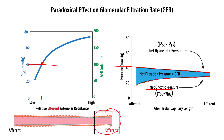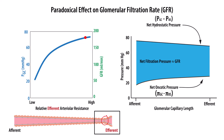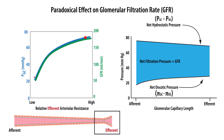As we increase the efferent arteriole resistance, we will increase the hydrostatic pressure, as we see here. If we maximally constrict the efferent arteriole — high resistance — we have a very high hydrostatic pressure. If nothing happened to the oncotic pressure, we would see a massive increase in net ultrafiltration pressure, which would translate to a parallel increase in GFR, as shown by the green line.